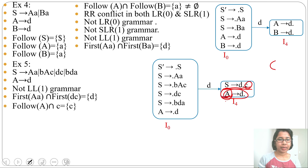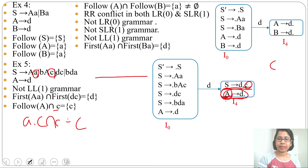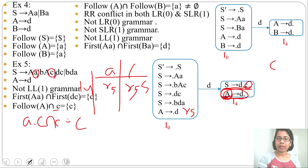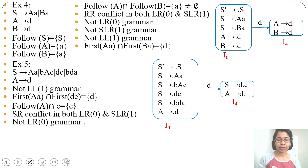FOLLOW(A) ∩ {c}: FOLLOW(A) will be {a, c}, so FOLLOW(A) = {a, c} and intersection with {c} gives {c}. There is a common element. This reduction A → d• (rule r5) will be written in the 'a' column and also in the 'c' column, while shift on 'c' is also written in the 'c' column. So this is a shift-reduce conflict in SLR1.